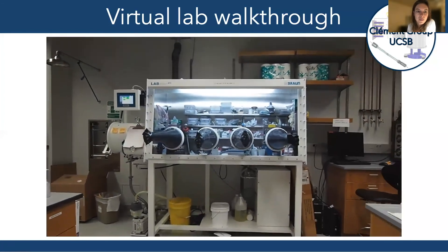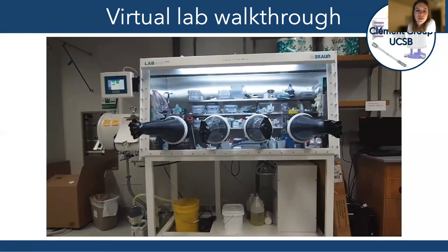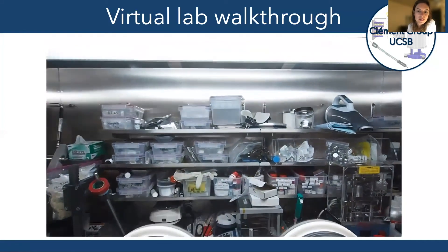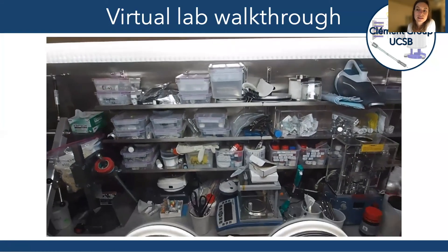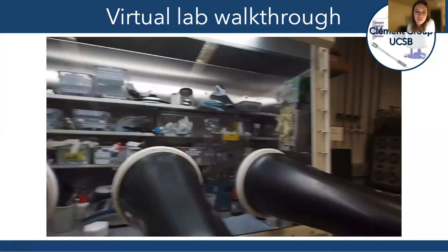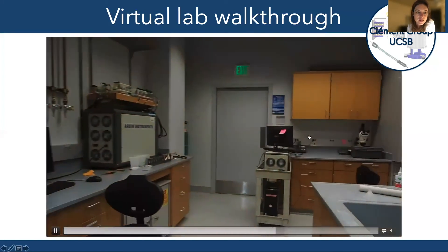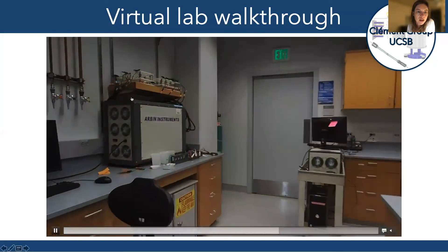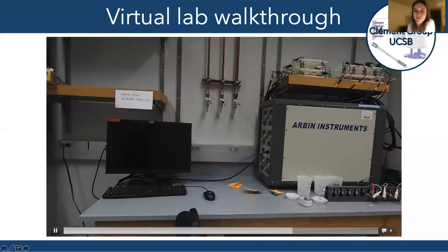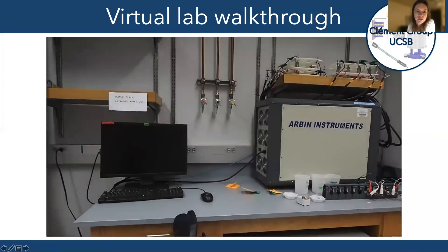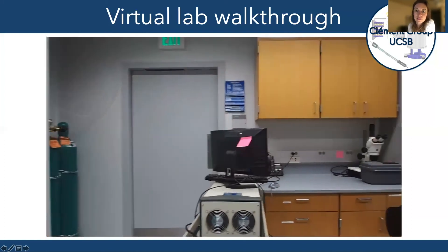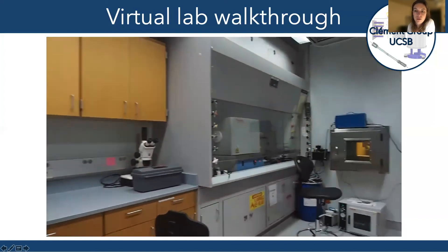Going back to that glove box now — as you can see, if you look in that glove box, you'll see that we are well equipped to prepare both coin cells and swage lock cells for battery testing. We have a number of battery cyclers in the lab, as shown here. This is an Arbin instrument battery cycler, which allows us to automatically charge and discharge electrochemical cells to measure their performance.